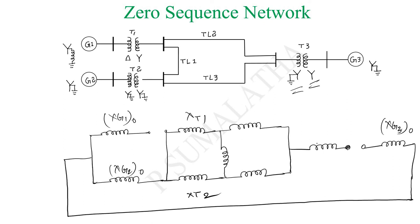This is how we can represent the given power system as positive, negative, and zero sequence networks. I hope it is clear. If you have any doubt, please comment in the comment section. Thank you.